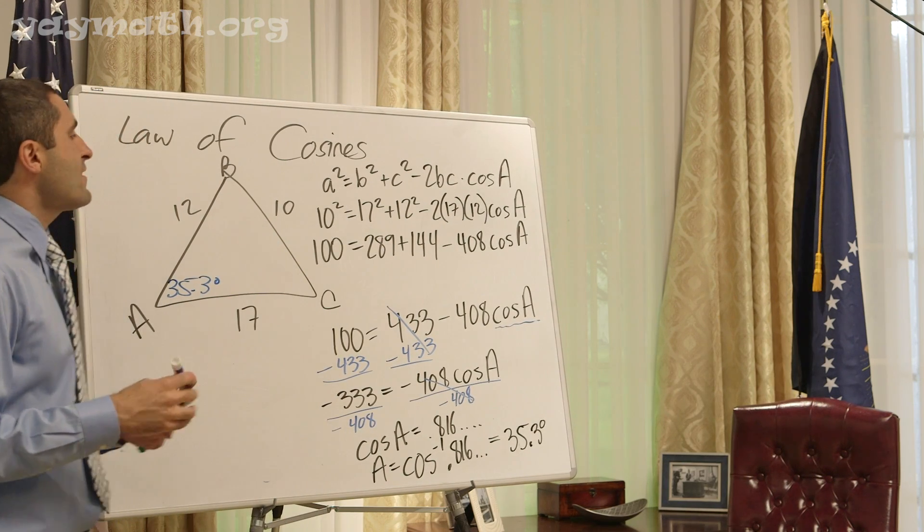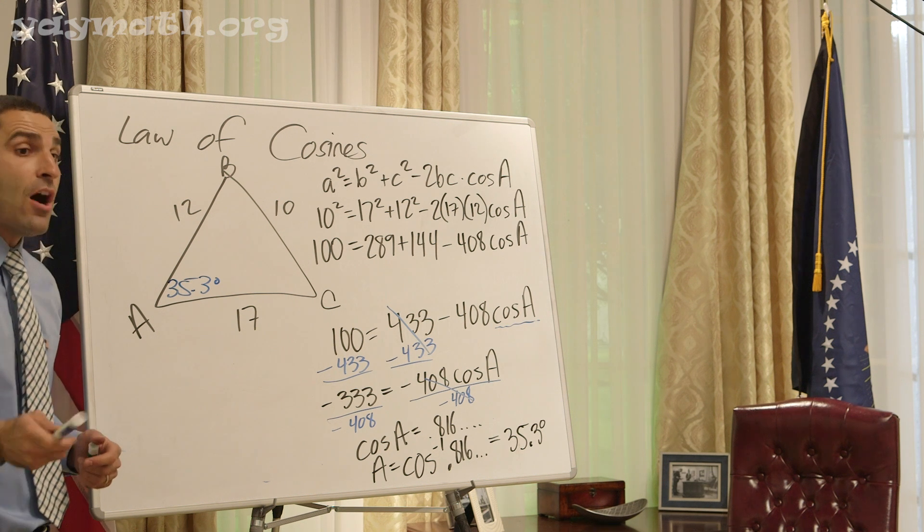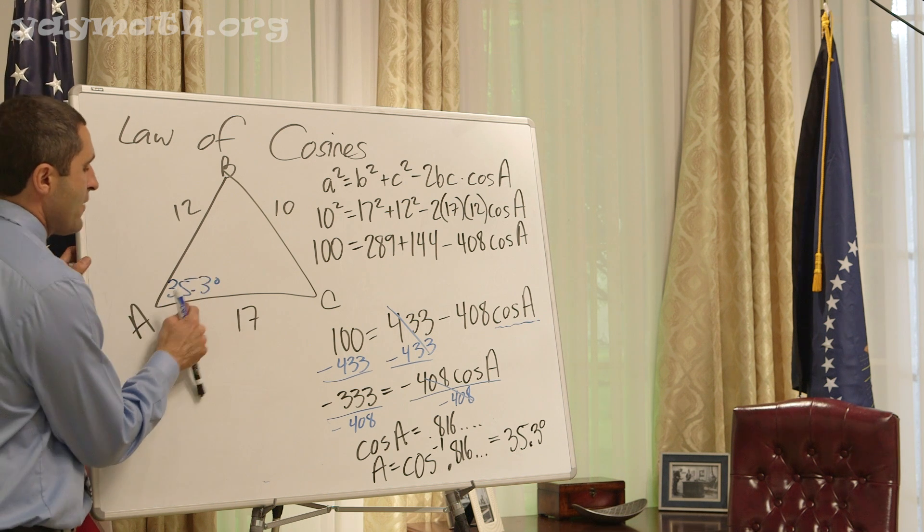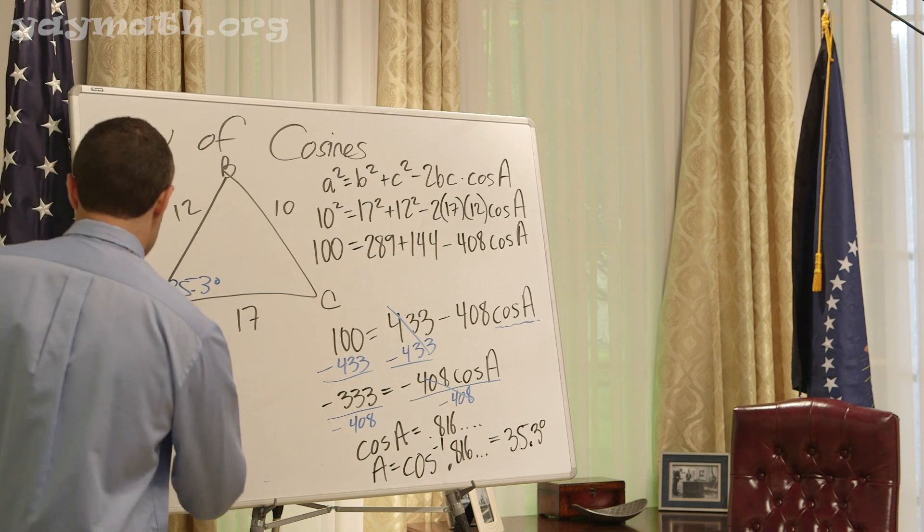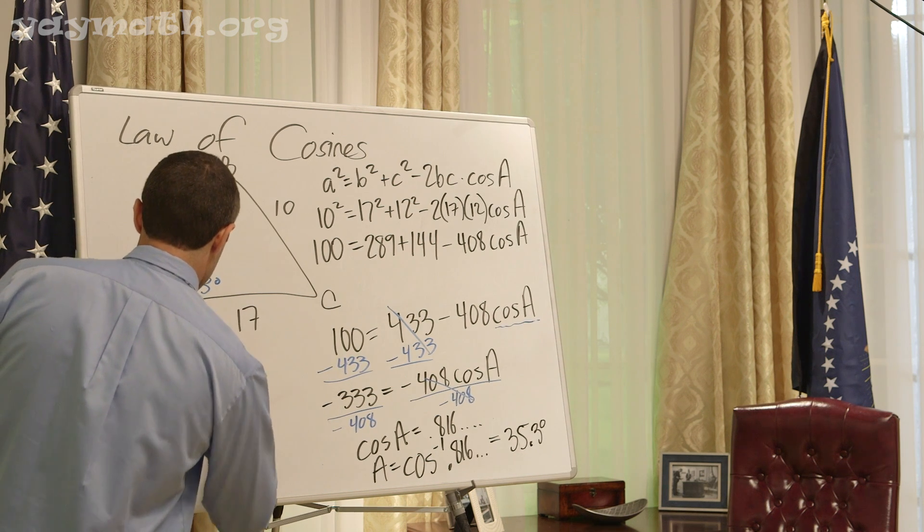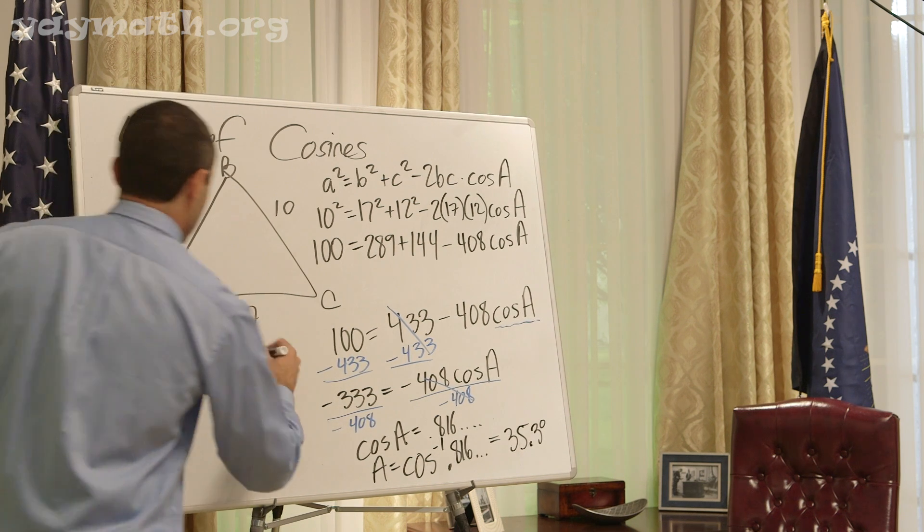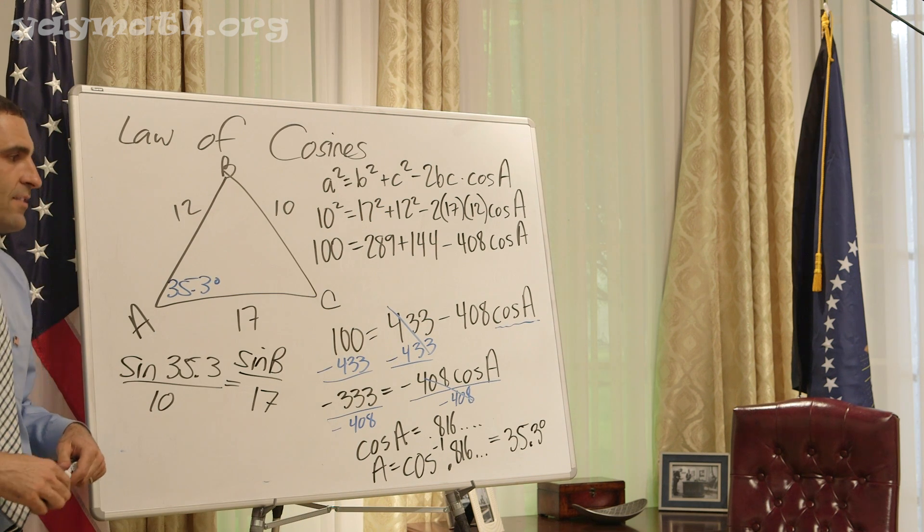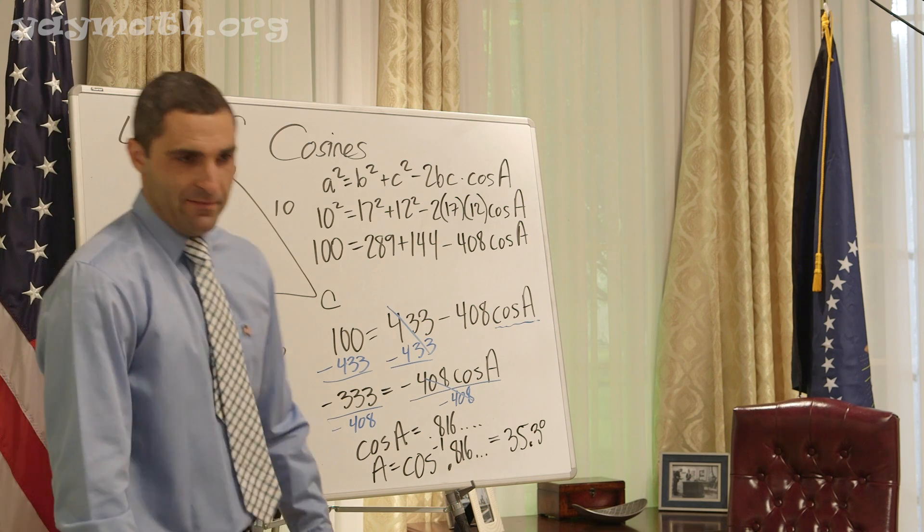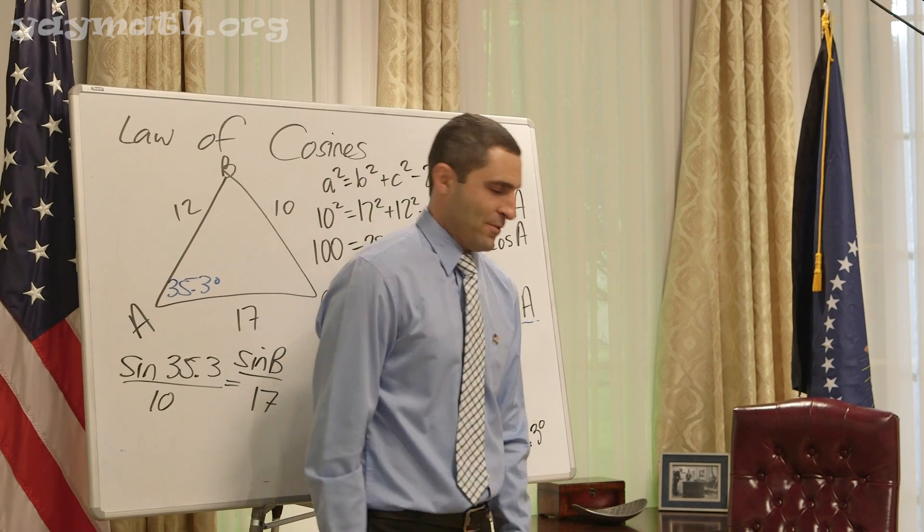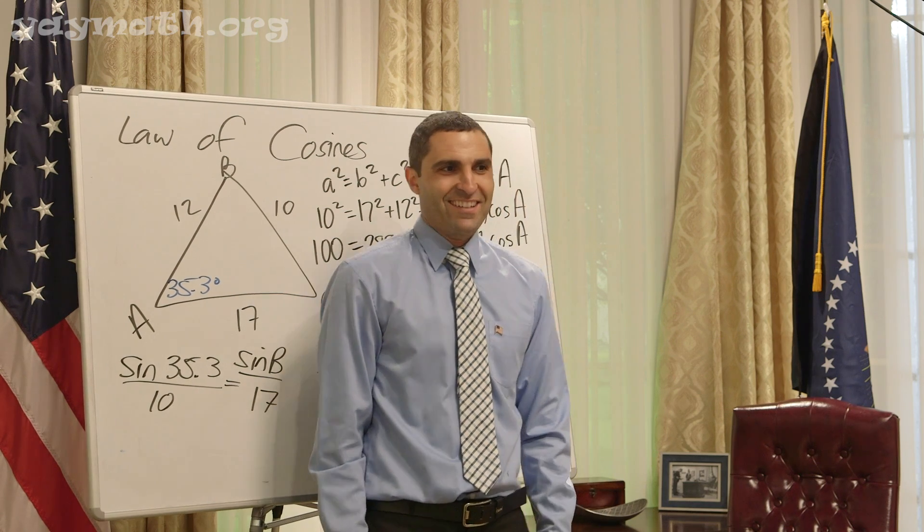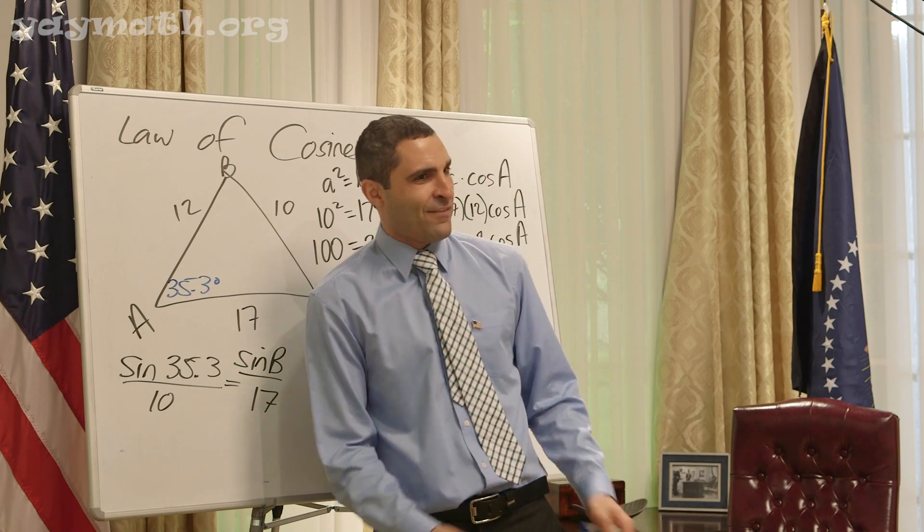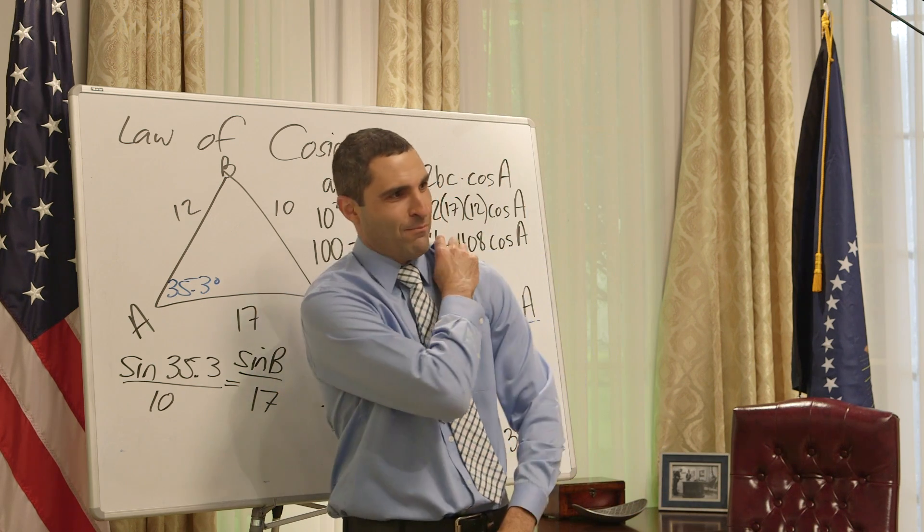Now are we obligated to use Law of Cosines again? No. What can we use? Law of Sines. Sine of 35.3 over 10 equals sine of b over 17. Any questions? That is legitimate. As a legitimate president born in Hawaii, you can't let that stuff bother you. Just brush it off.